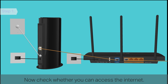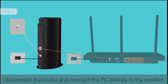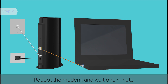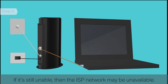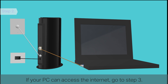Now check whether you can access the internet. Step 2: Test the ISP network by connecting your PC directly to the modem. Disconnect the router and connect the PC directly to the modem. Reboot the modem and wait one minute. Check whether the PC can access the internet. If it's still unable, then the ISP network may be unavailable — contact your ISP. If your PC can access the internet, go to Step 3.